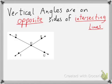We'll start with vertical angles. Vertical angles are on opposite sides of intersecting lines, such as in this picture right here. In this picture there are two sets of vertical angles. One set are these two right here. They are on opposite sides of those intersecting lines.